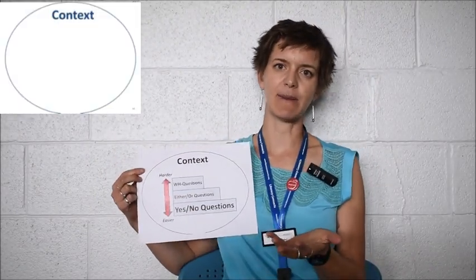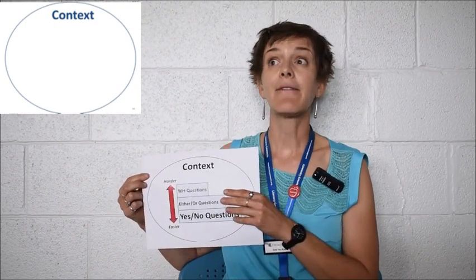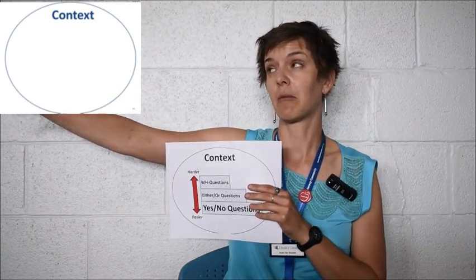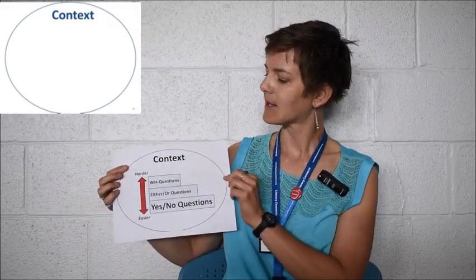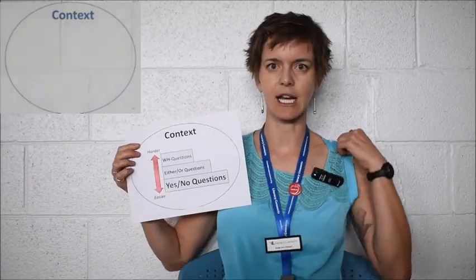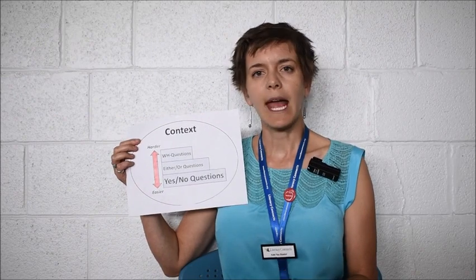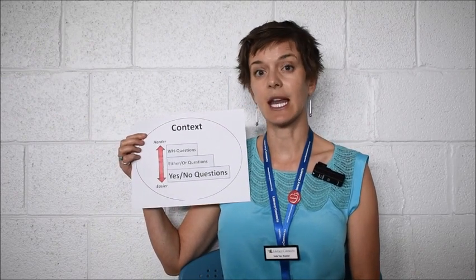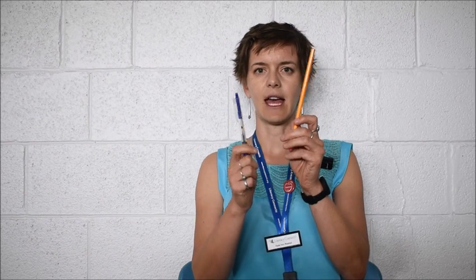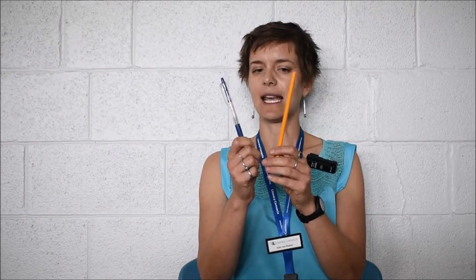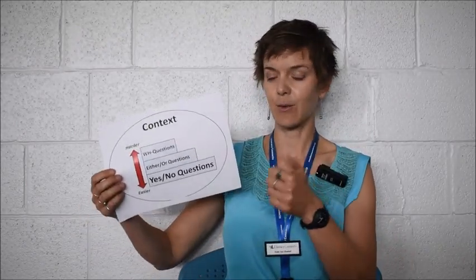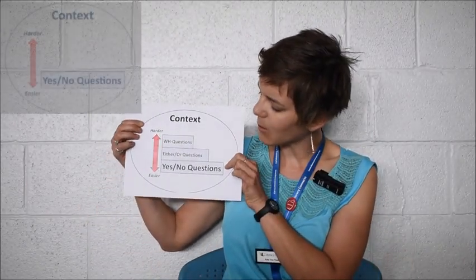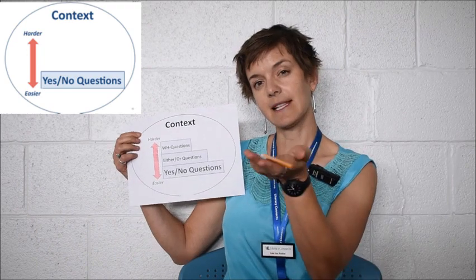Let's say in class we've been talking about classroom words. If I then ask a question about Washington DC, that's totally out of context and it's going to be really hard for students to answer. So I want to make sure that I keep things in this context. Now the most basic way for a student to show comprehension is to point. So I have a pencil and a pen, and I can say: point to the pencil, point to the pen — and the students can show me how much they know. If they're good with that, then we can move up to yes/no questions. Is this a pencil?